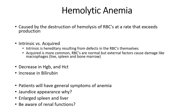Hemolytic anemia is the third major cause of anemia — characterized by increased destruction of red blood cells, causing elevated bilirubin levels, similar to thalassemia. When red blood cells are destroyed quickly and hemolysis occurs, they're filtered through the liver, the spleen becomes enlarged, and the accumulation of large amounts of destroyed red blood cells can clog kidney tubules, leading to acute kidney injury.